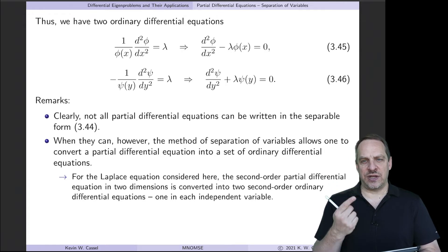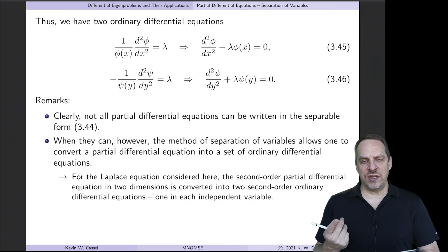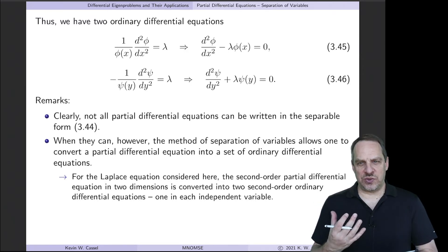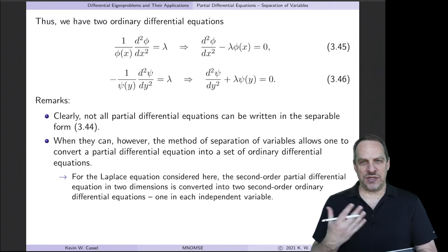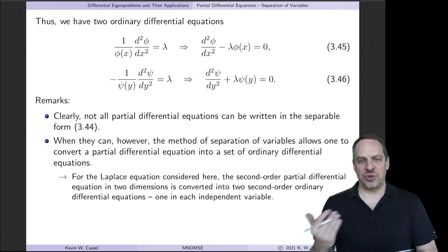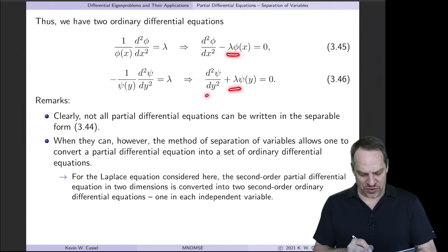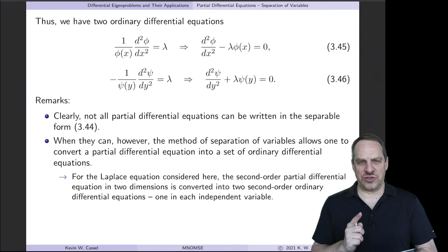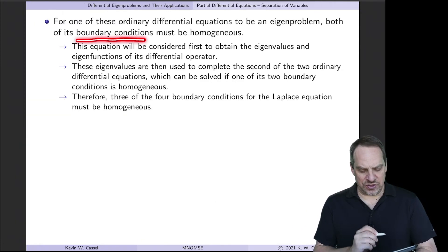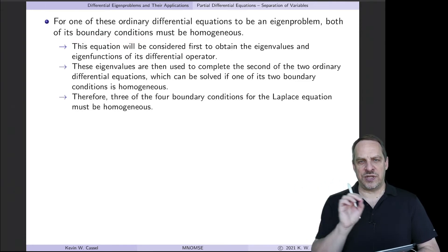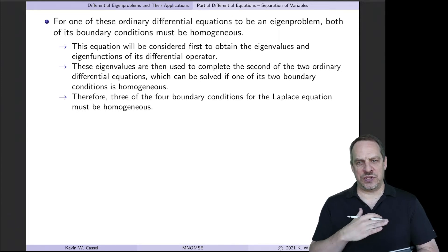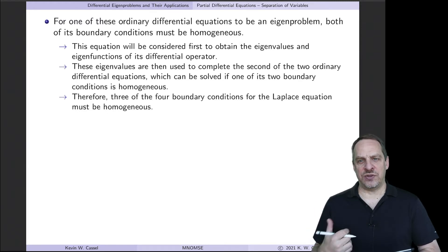We've converted one second-order PDE in x and y into two second-order ODEs, one for φ(x) and one for ψ(y). This doesn't apply to every PDE — there are separable PDEs such as Laplace's equation and Schrödinger's equation. Both ODEs look like differential eigenproblems with λ in them, but only one actually is. It depends on the boundary conditions: for a differential eigenproblem, both boundary conditions on either end must be homogeneous. That's the eigenproblem we address first, then use the resulting eigenvalues λ to solve the second equation.